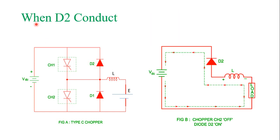In the second case, when D2 is conducting, the inductor starts discharging and changes polarity — this terminal becomes positive and this becomes negative. The direction of current is again the reverse direction of the reference current. In this case, the current is negative and the voltage is positive, so the device works in the second quadrant.